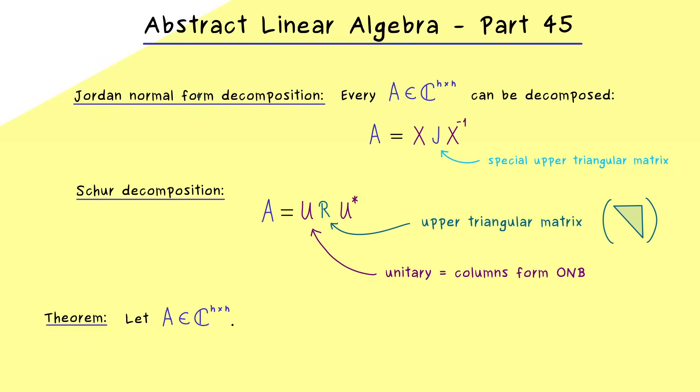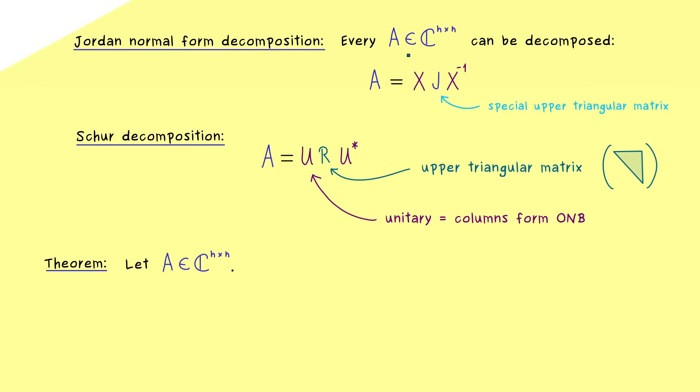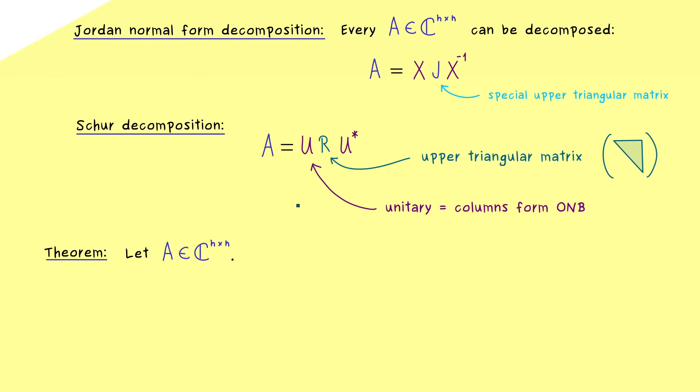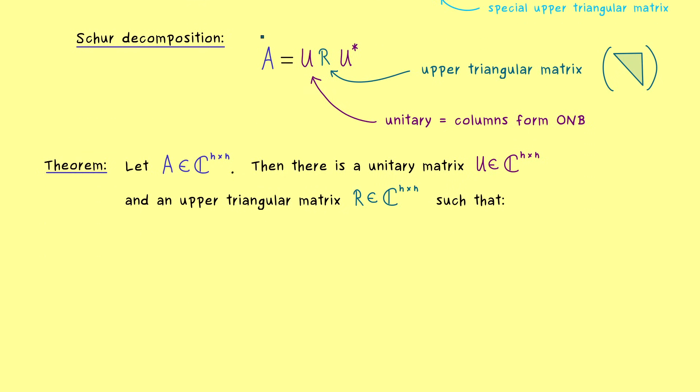Indeed, as for the Jordan normal form, we have to go to the complex numbers, because only over the complex numbers the decomposition always exists. The problem for the real numbers is always the same, namely that a real valued matrix can also have proper complex eigenvalues. Therefore it's much easier to formulate everything just for the complex numbers. And as already mentioned, the Schur decomposition is quite simple. We just get the existence of a unitary matrix U and an upper triangular matrix R. And then what we get is the similarity relation as we have already mentioned before.